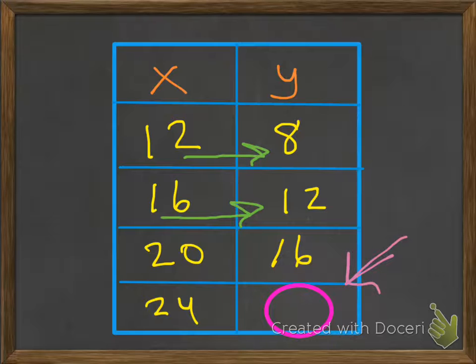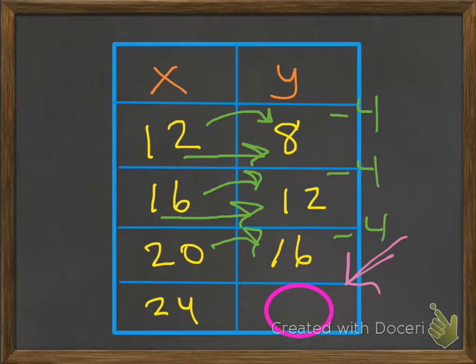From 12 to 8, we're actually going down by minus 4. Same thing. From 16 to 12, we subtract 4. From 20 to 16, we're going to subtract 4. So if you follow that pattern, if we go from 24 and subtract 4, we're going to get 20.